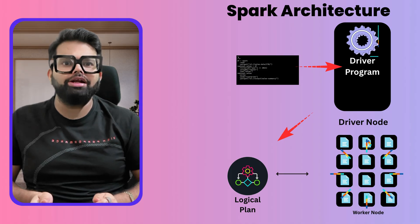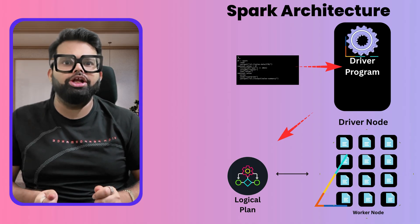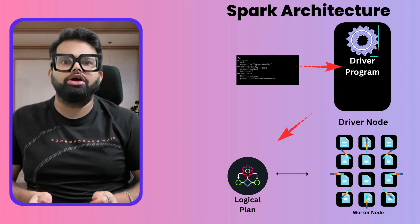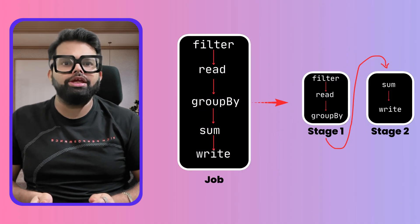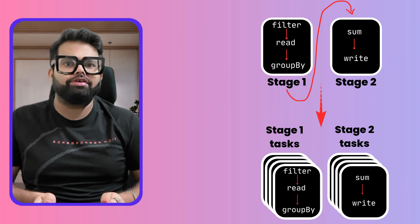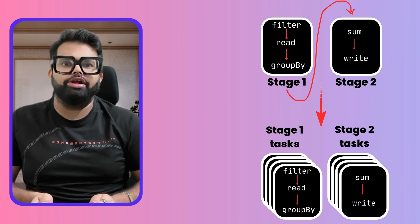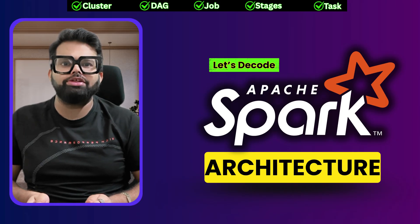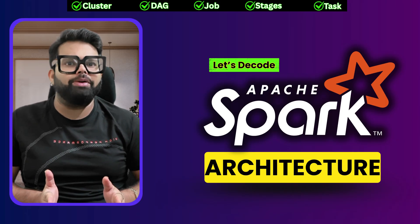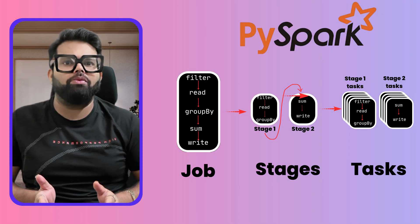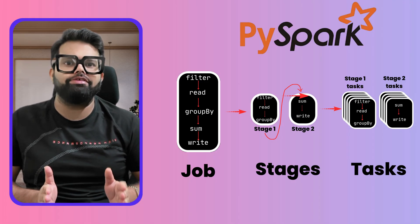But behind the scenes, Spark doesn't run this code. It launches a massive distributed computation across a cluster, breaking your job into stages, splitting those into tasks, and coordinating it all for speed and fault tolerance. In this video, we will deep dive into Spark's execution engine and break down how your simple PySpark code gets transformed into jobs, stages, and tasks.